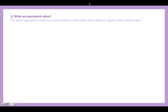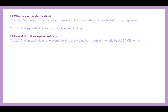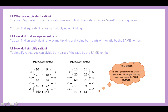What are equivalent ratios? The word 'equivalent' in terms of ratios means finding other ratios that are equal to the original. You can find equivalent ratios by multiplying or dividing both parts of the ratio by the same number. It has to be the same number — you can't divide one part by two and the other part by five.